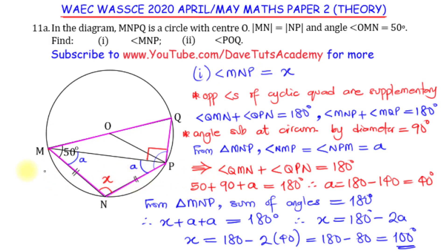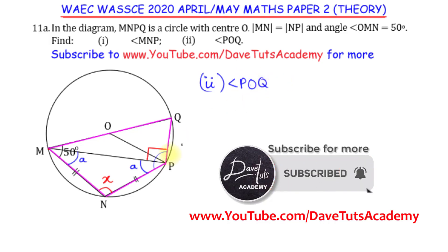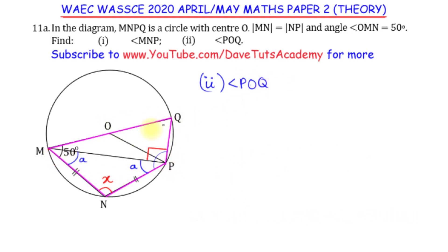You can see how we found it by looking at the cyclic quadrilateral, the isosceles triangle, and the fact that the angle subtended by a diameter at the circumference is a right angle. Bringing these three together, we got angle MNP as 100 degrees. Now we move on to angle POQ. In this second part, we are looking for angle POQ — let me call that angle Y, so I will not be confused. There are quite a number of ways to solve this particular question.